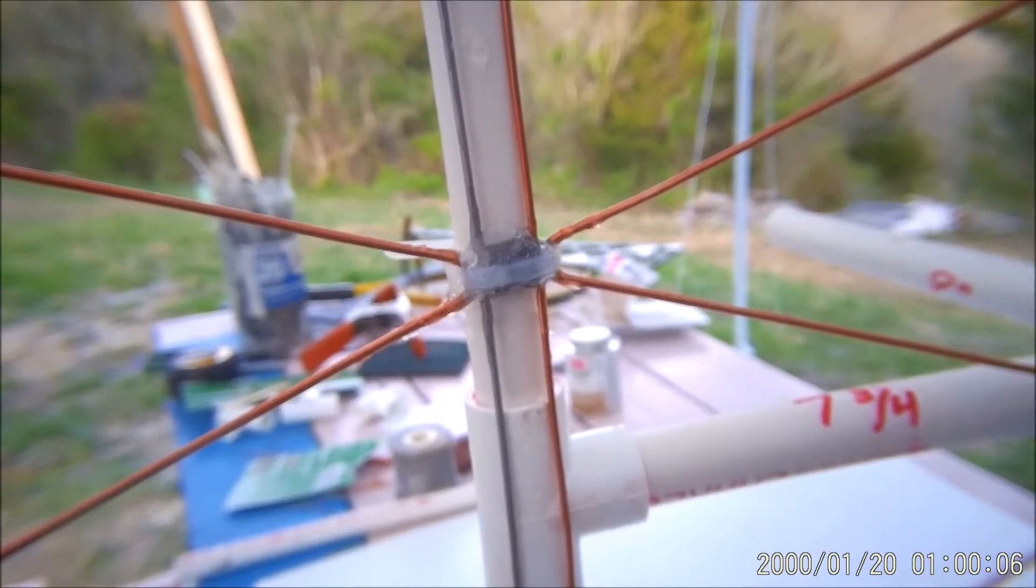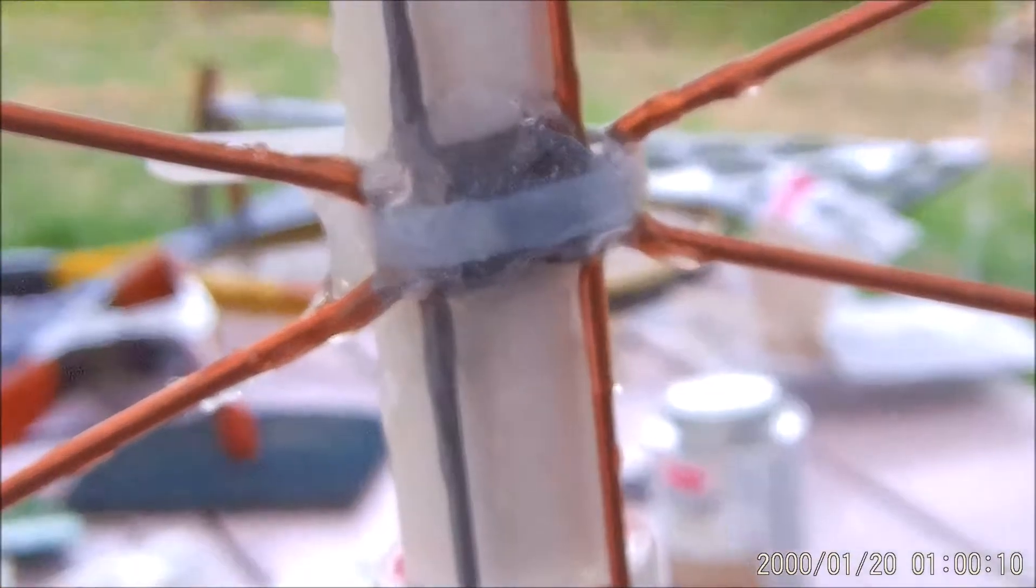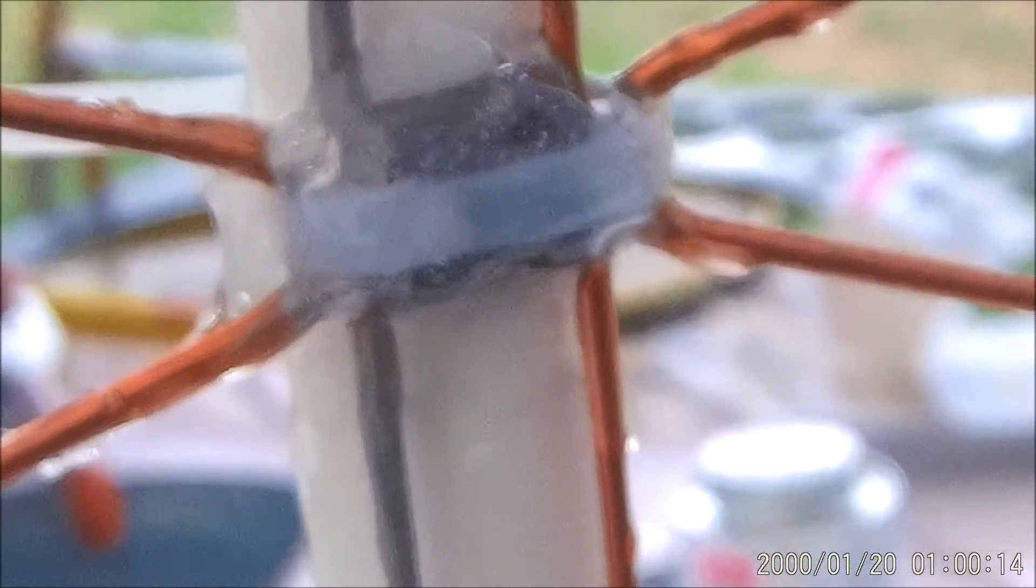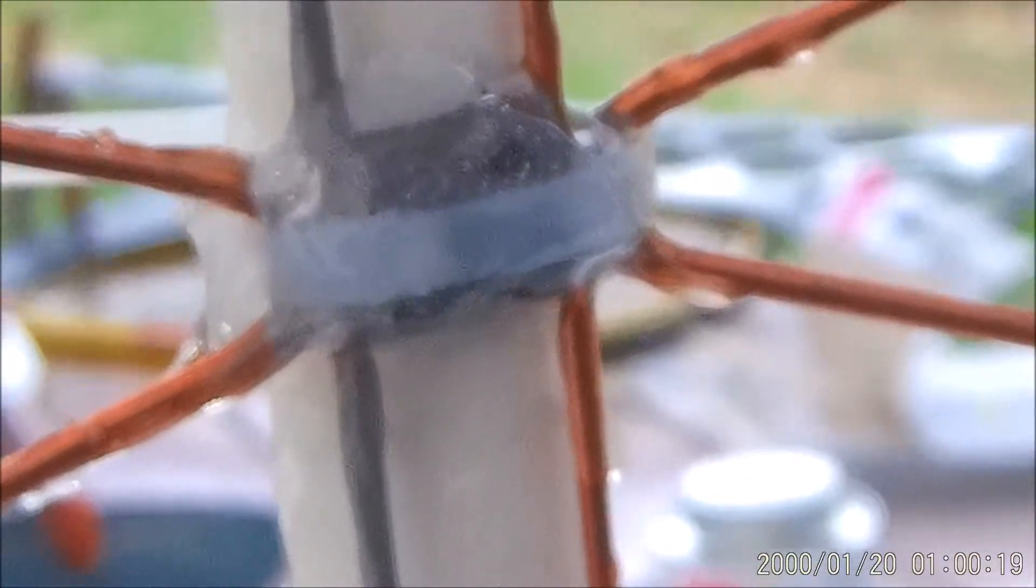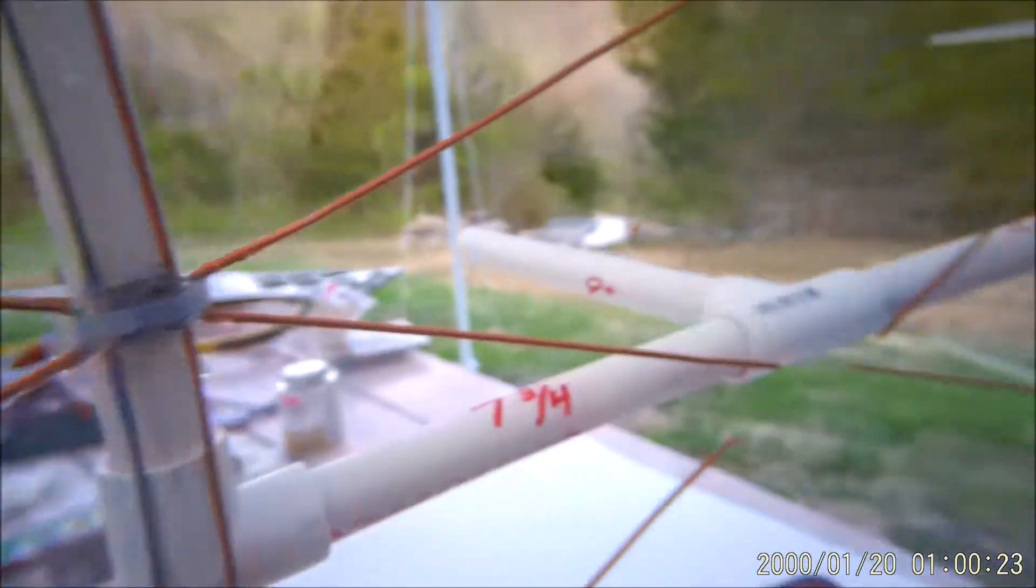I'll try to give you a close-up of the epoxy and zip ties, see if that helps. Nothing to it, just throw some epoxy on there and make sure it's stuck to the PVC. That's it.